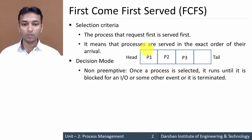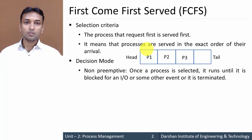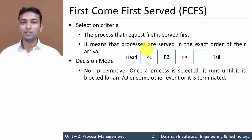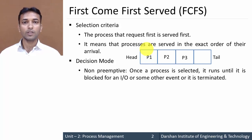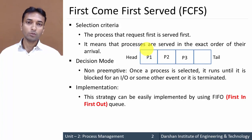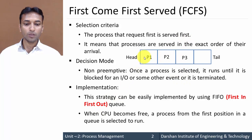The decision mode is non-preemptive, meaning once a process is selected, it runs until it is blocked for I/O or some other event, or it terminates. Once a process starts executing, it will not be stopped by any other process or even the operating system until it voluntarily releases the CPU. Implementation is simply done using a FIFO queue — First In, First Out. When the CPU becomes free, the process from the first position in the queue is selected to run.